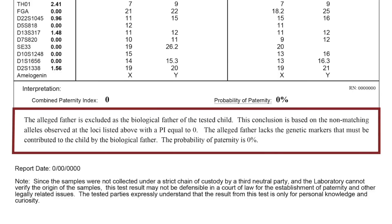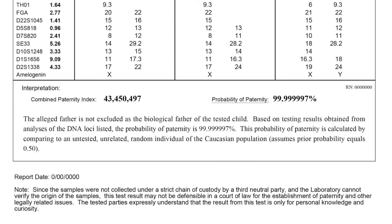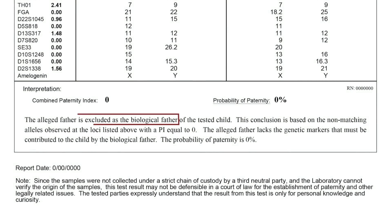This paragraph of text contains our DNA scientists' conclusion about your test. Because a probability of paternity is never 100%, we use the terms 'excluded' and 'not excluded' in the conclusion statement. If the conclusion states 'is not excluded as the biological father,' this phrase means the possible father most likely is the biological father of the child based on the data. If the conclusion states 'is excluded as the biological father,' this phrase means the possible father is not the biological father of the child based on the data.